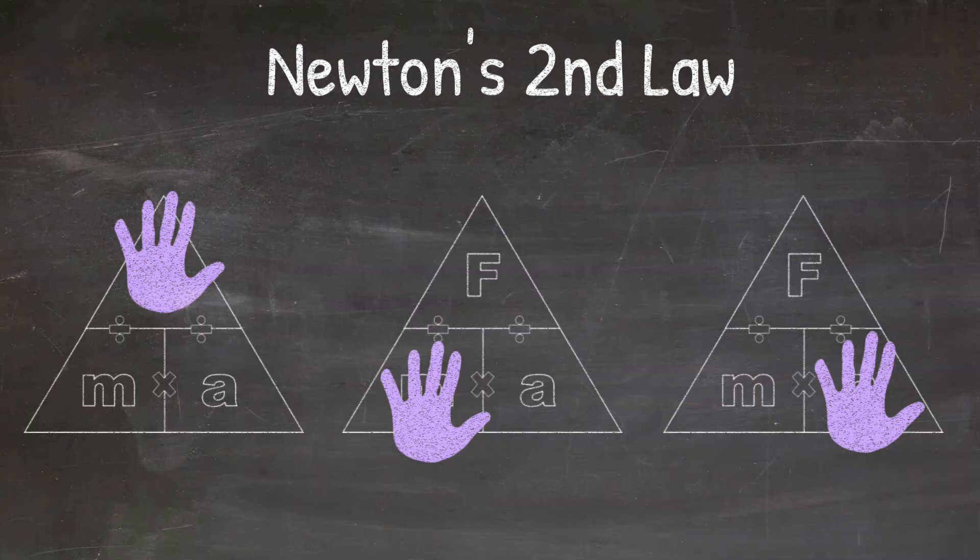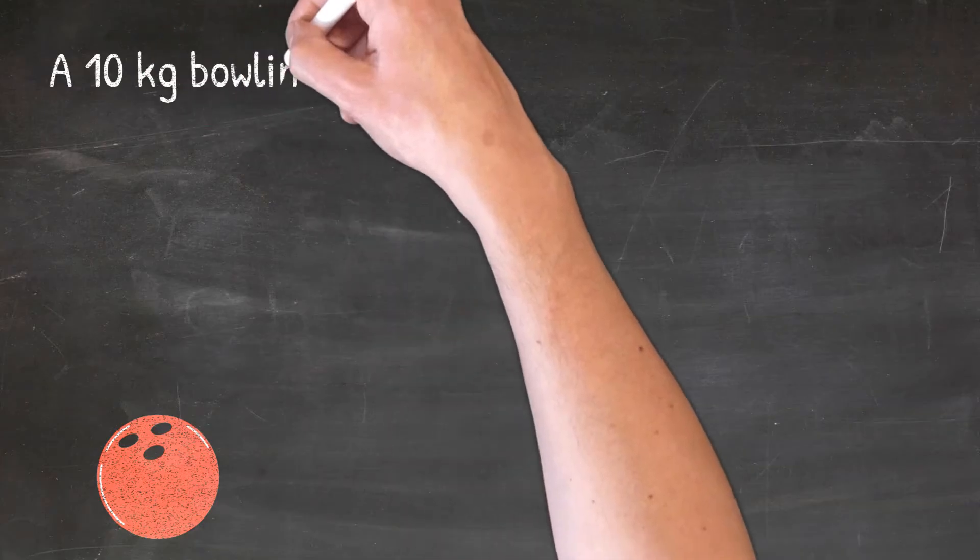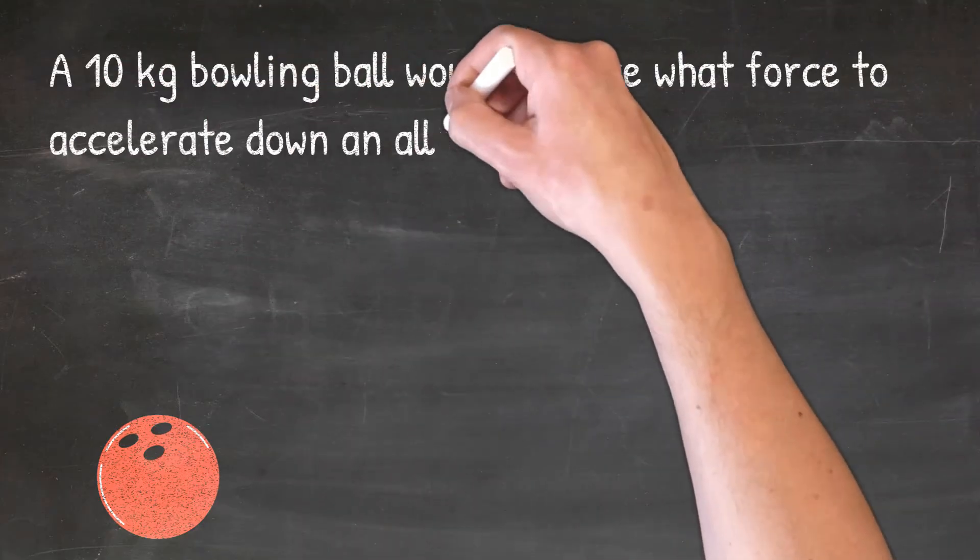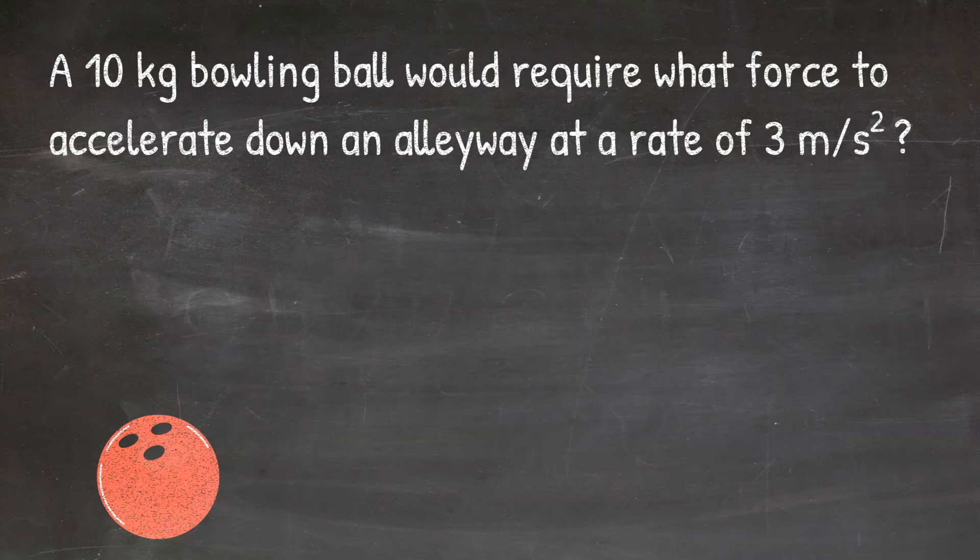Now let's look at some practice problems. Our first problem says that a 10 kilogram bowling ball would require what force to accelerate down an alleyway at a rate of 3 meters per second squared. So the first thing I need to do is figure out what the question is asking me to solve for. I see the question is asking me what force would be required, so I know I'm solving for F.